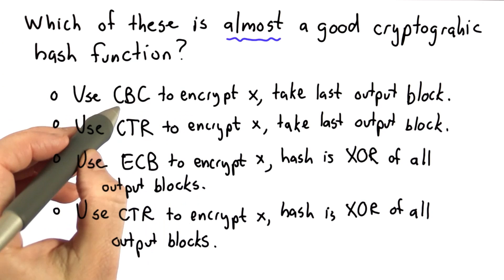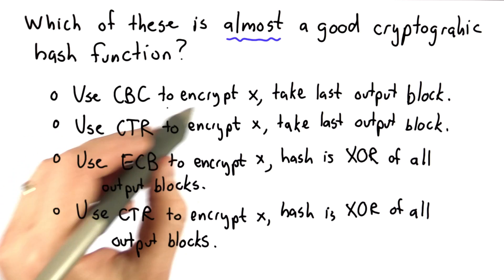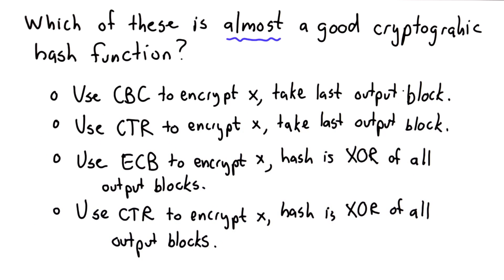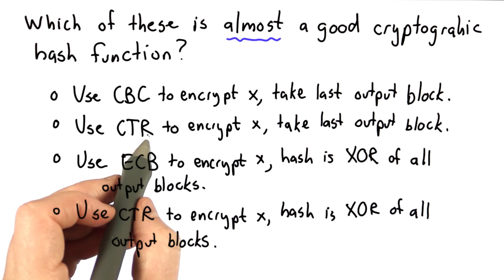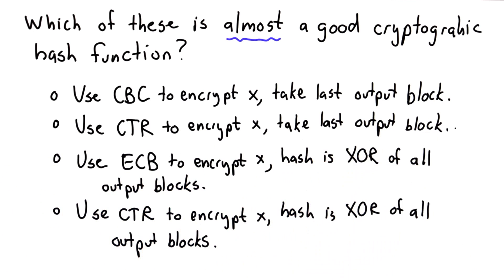So here are the choices. Use cipher block chaining mode to encrypt x, and then take the last output block as the value of the hash. The second choice is to use counter mode to encrypt x, and then take the last output block. The third choice is to use electronic codebook mode to encrypt x, and then take all the output blocks, XOR them all together, and use the result as the hash value. And the fourth choice is to use counter mode to encrypt x, XOR together all the output blocks, and that's the hash value. Which one of these makes the most sense to provide the cryptographic hash function properties that we need?